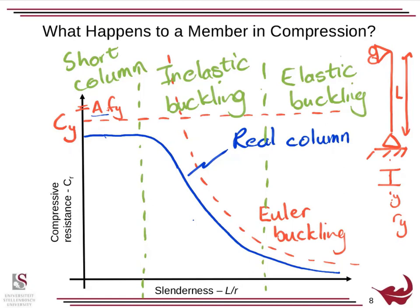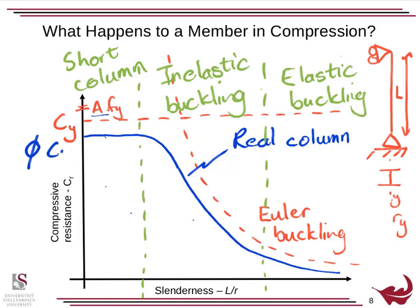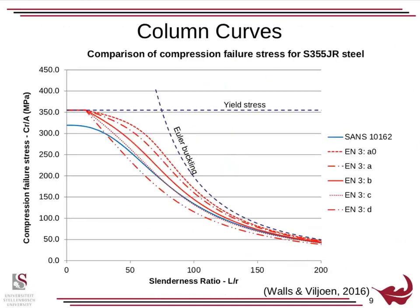We want to find this blue curve, because then it doesn't matter what section we have — we can determine the compressive resistance of it. This behavior at the top is phi·Cy, because we drop from there to there, so it's 90% of our yield strength. Down in the elastic buckling region it's also roughly 90%. This is comparing the South African code (SANS) — the blue line — with the European code. The Europeans actually use 100% of yield strength, where in South Africa we only use 90%.